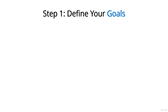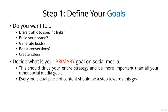Here's a step-by-step plan you can implement using the information you already learned in this guide. Step 1: Define your goals. Your very first step is to decide what you want your social media presence to do for you. For example, do you want to drive traffic to specific links, build your brand, generate leads, boost conversions, or create sales? Those are just a few of the ways you can use social media — go back to those first few videos to refresh your mind on many of the other ways.